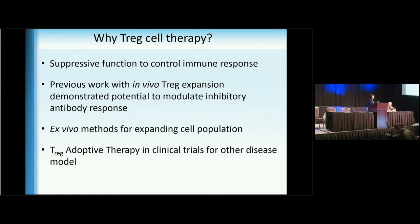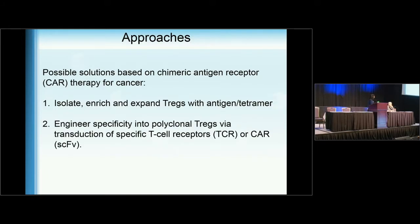I'd like to switch to Treg cell therapy. Why Treg cell therapy? Tregs have very strong suppressive function to control immune responses, and previous work with in vivo Treg expansion demonstrated the potential to modulate inhibitory responses. There are established ex vivo methods for expanding Treg cell populations, and Treg cell therapy is now in clinical trials in several disease models. Approaches include isolating, enriching, and expanding Tregs with antigen stimulation, or engineering antigen specificity in polyclonal Tregs using specific T-cell receptors or a CAR strategy.